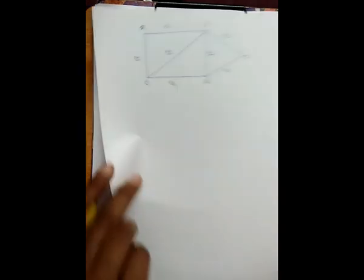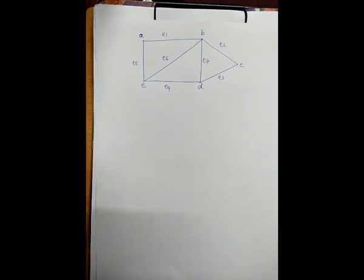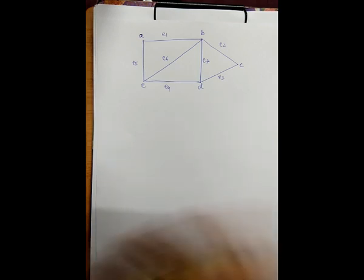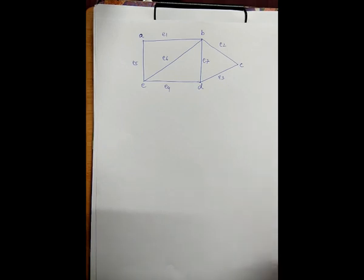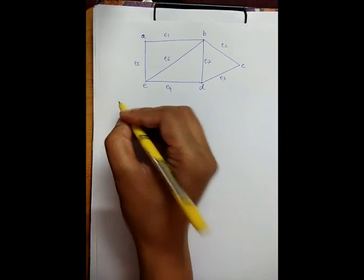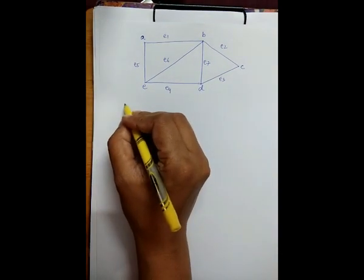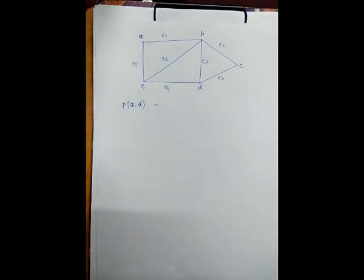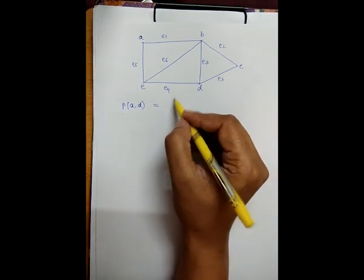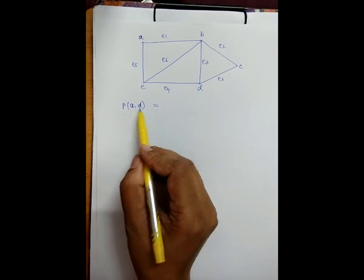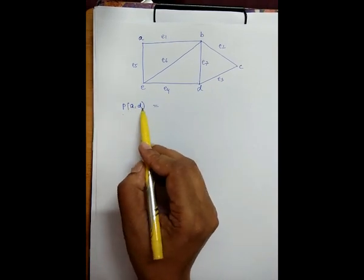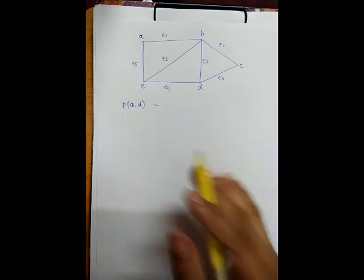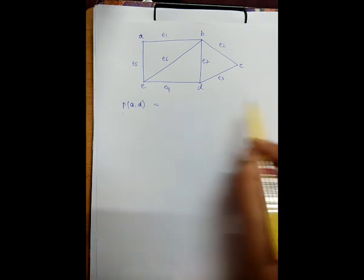Suppose we take an example. We have a graph and we have to construct the path matrix for this particular graph. We have to consider two vertices. For this case, I am finding the path matrix between vertex A and D. So P of AD is equal to a matrix in which the rows represent all the paths between A and D — how we reach from A to D — and the columns represent the number of edges.